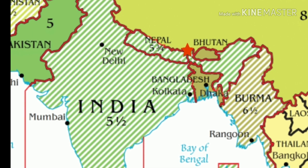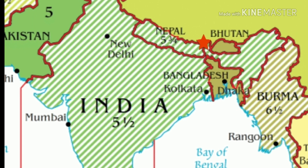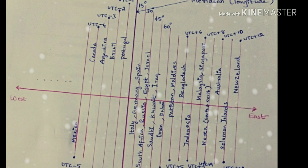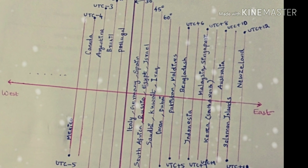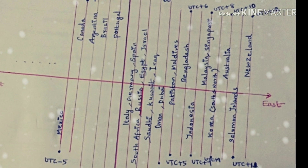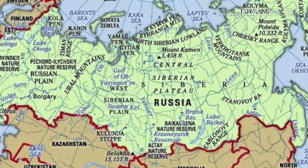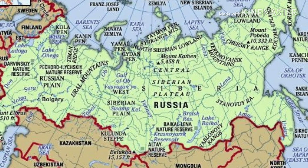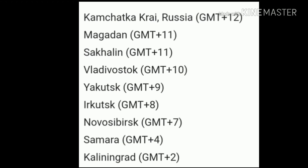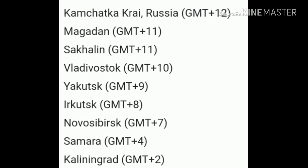Russia is a big country and there is a big difference between West and East, so there are many time zones. That's why Russia has GMT plus 2 in the West and GMT plus 4 in the East.